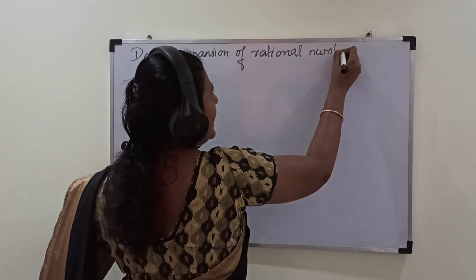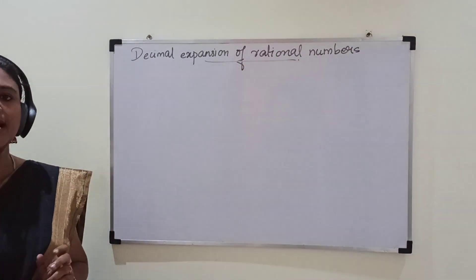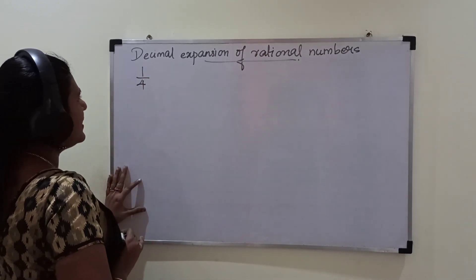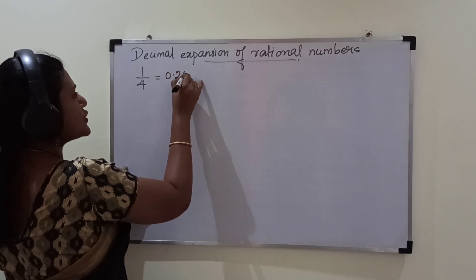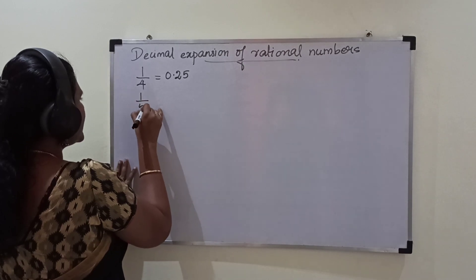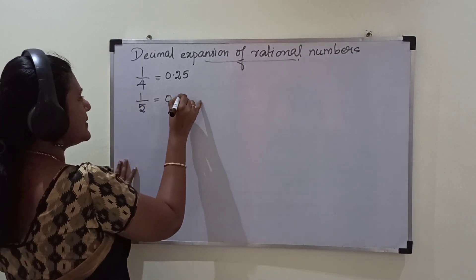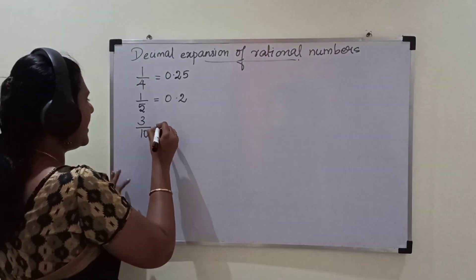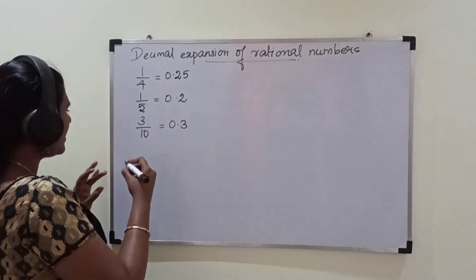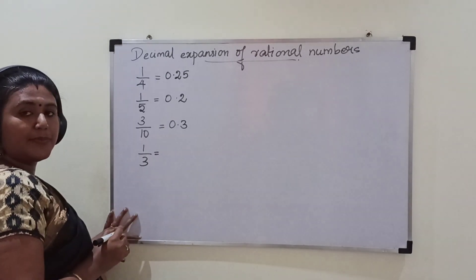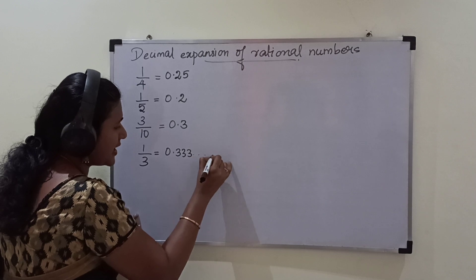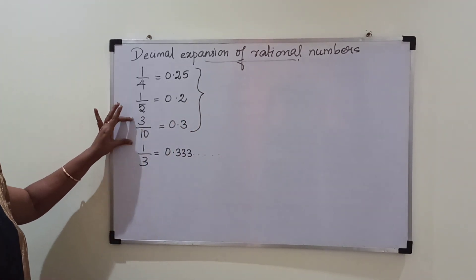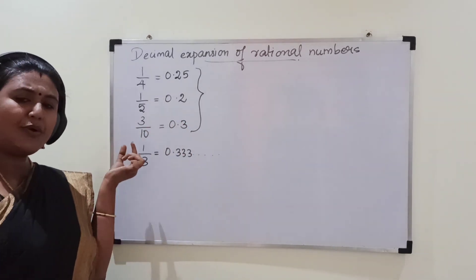Now we will see the next application: decimal expansion of rational numbers. I am going to explain this through a few examples. Let us consider the rational number 1/4 — its decimal expansion is 0.25. Next, 1/5 — decimal expansion is 0.2. Then 3/10 — decimal expansion is 0.3. One more example: 1/3 — decimal expansion is 0.333... The first three rational numbers have terminating decimal expansions.